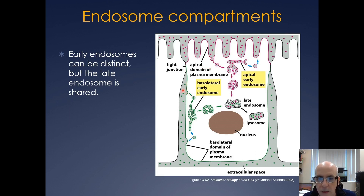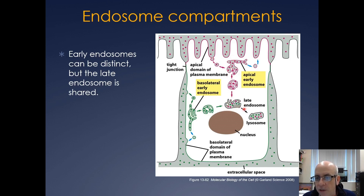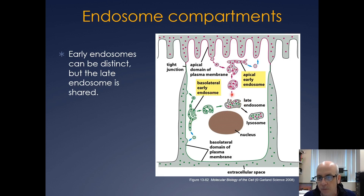You'll endocytose from one surface, and then it'll go on and fuse with the late endosome, and things are also coming from the other side. So the late endosome is sort of the intersection of both of these during endocytosis. Eventually they'll go off to the lysosome. These things can be very distinct early on, but as you get to the later endosomes they become heterogeneous in nature, containing both proteins from the apical surface and from the basolateral surface.